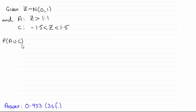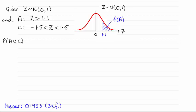And the best way I can illustrate this is to first of all look at the probability of A happening. And we can see from drawing a diagram that's given by this area here. Probability of A then is the probability of Z being greater than 1.1.